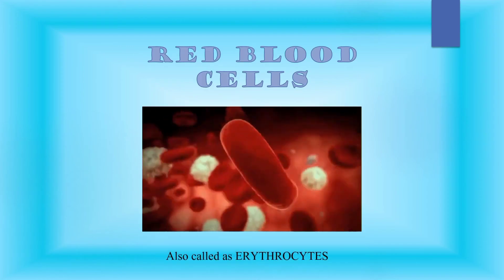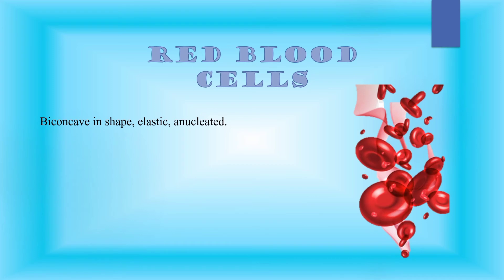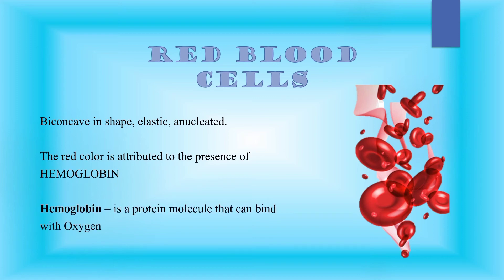Let's talk about red blood cells, which are also called erythrocytes. Red blood cells are biconcave in shape, elastic, and anucleated — meaning they don't have a nucleus. The red color is attributed to the presence of hemoglobin, which is a protein molecule that can bind with oxygen. This is the reason why red blood cells can transport gases throughout the body.